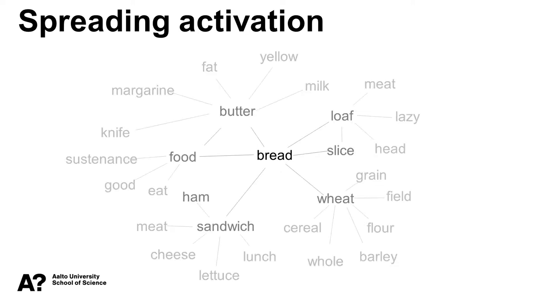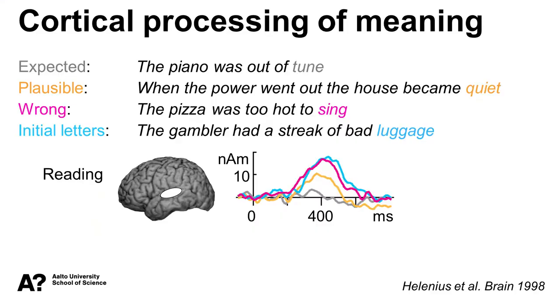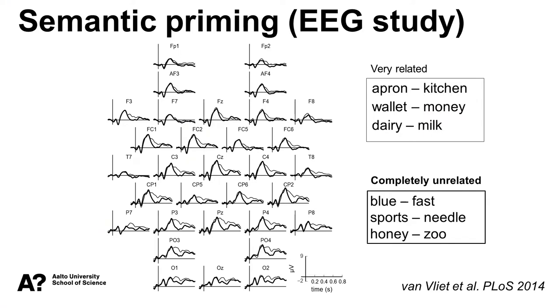So together they form a rich semantic representation. This network view of semantics has been useful for modeling a phenomenon in the brain known as semantic priming. You have already seen semantic priming at work during Rita Salmondin's overview. When a word is not expected based on the preceding context, there is a larger burst of activity in the temporal cortex. But semantic priming doesn't require complete sentences. It also works when showing a word pair, just two words that are either related or unrelated.